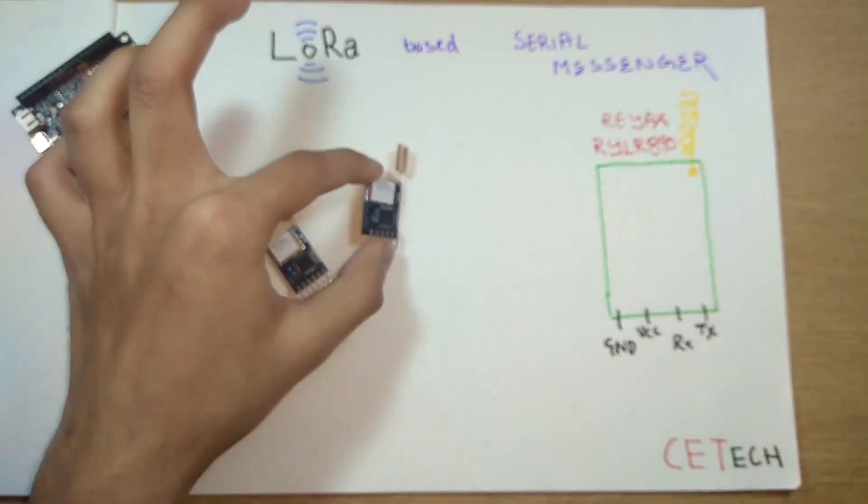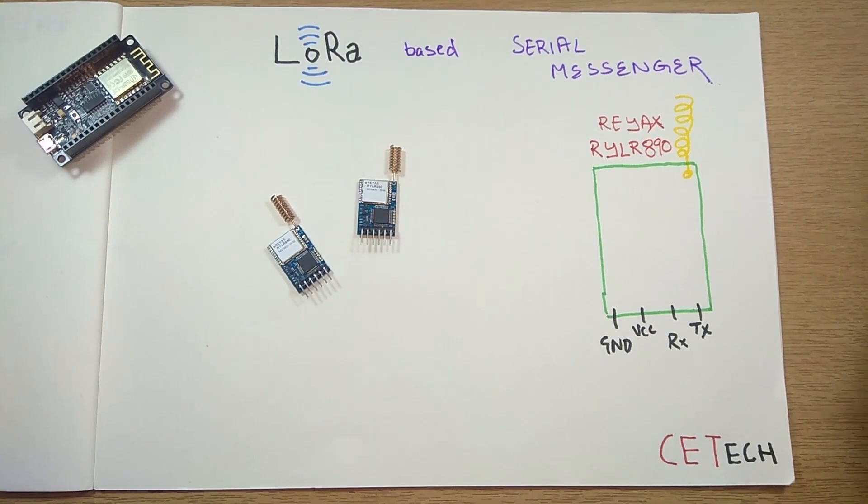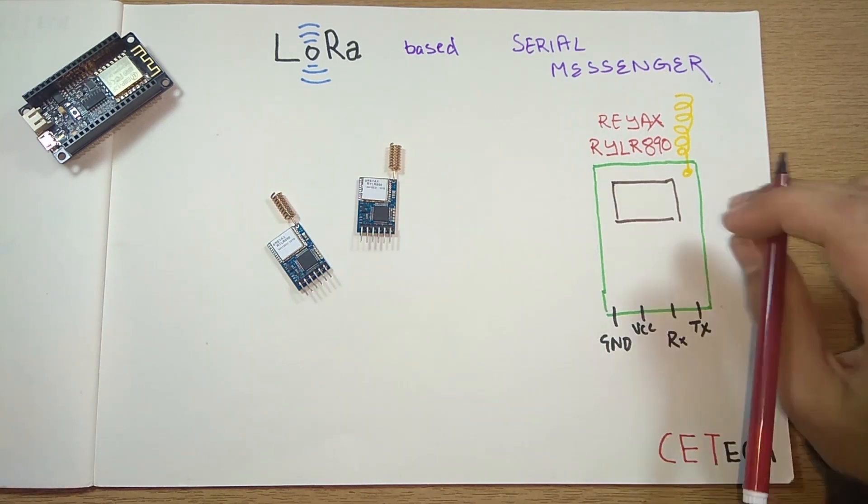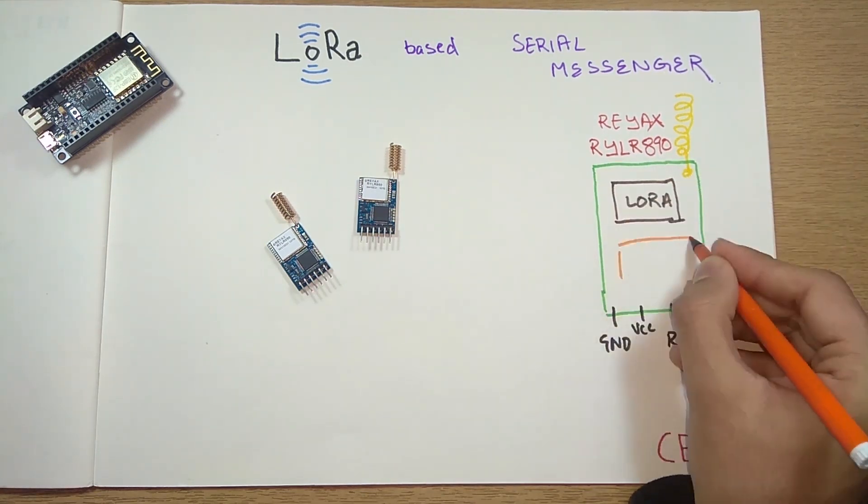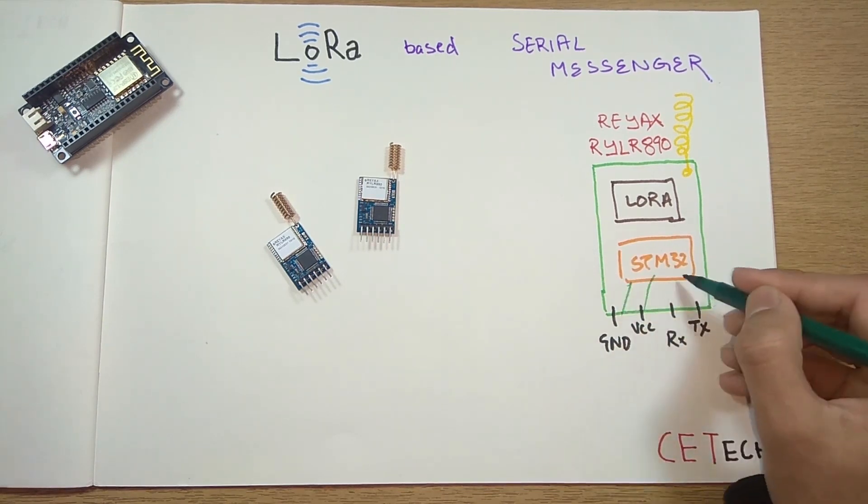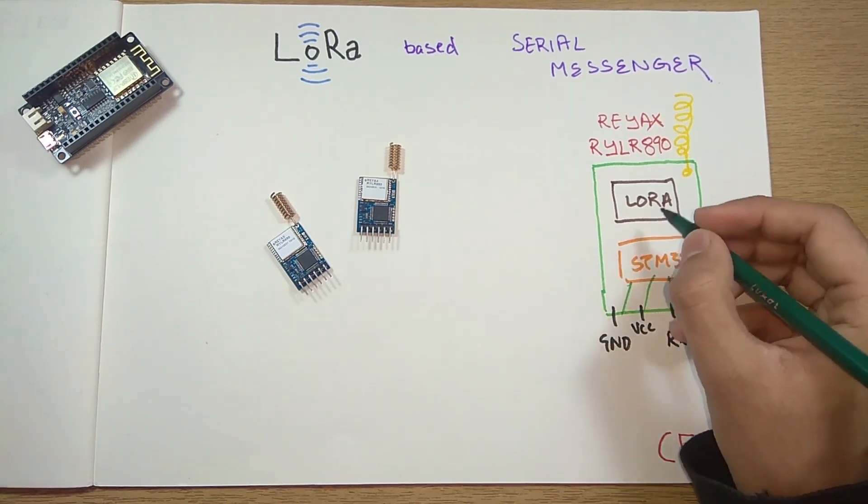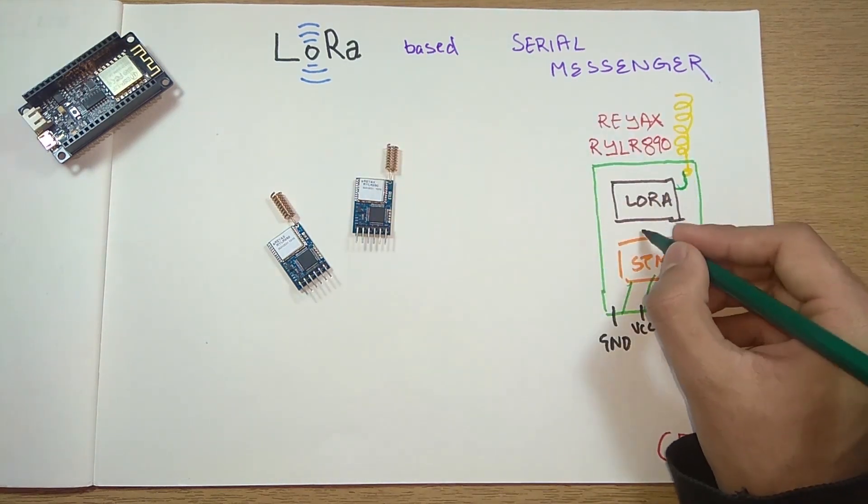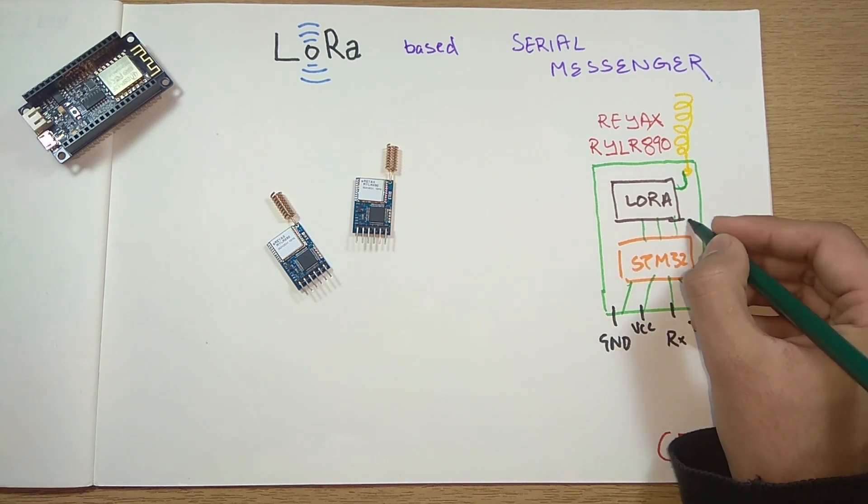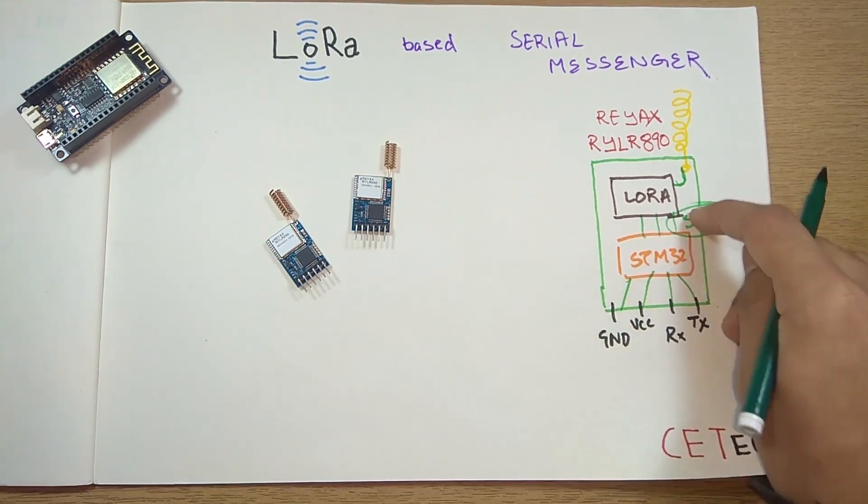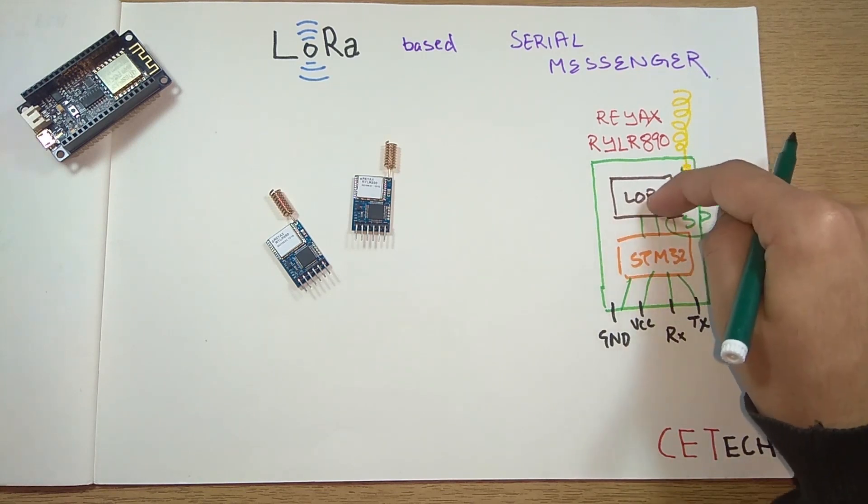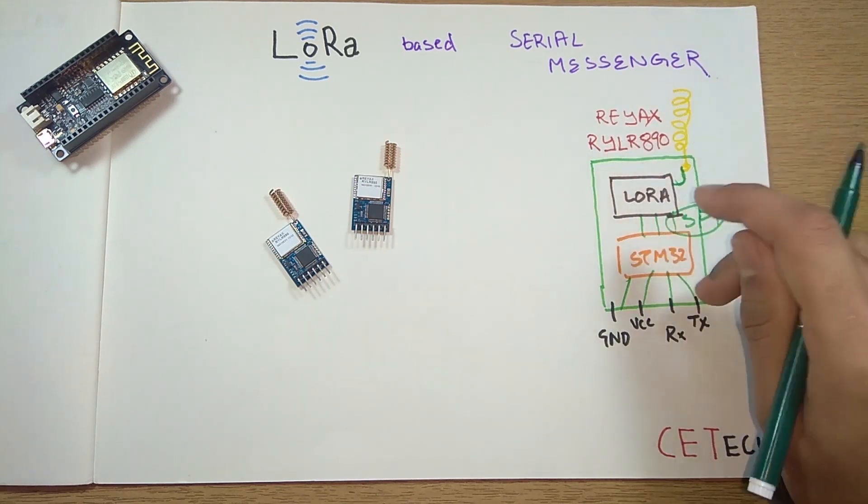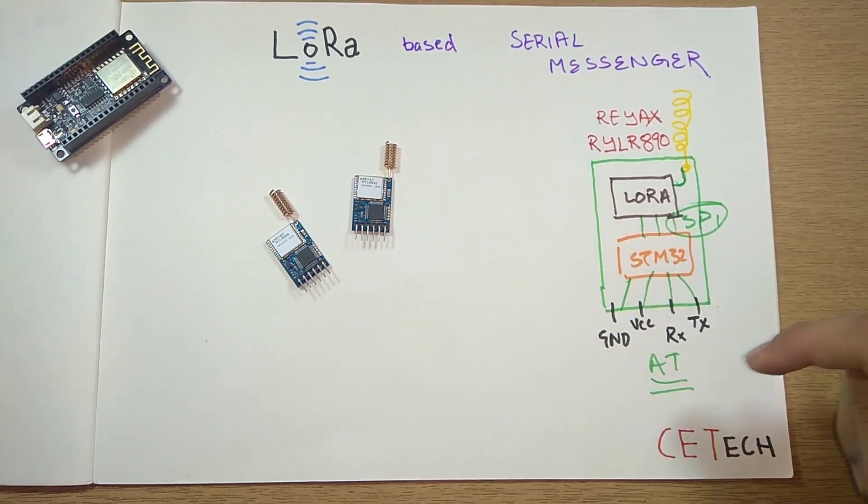To get a better picture, let's say this is the LoRa module inside the Reacts module. We also have an STM32, so all this is connected to the STM32. The LoRa is connected to the antenna - this cute little golden spring antenna. This may be connected using an SPI interface. We are saved the trouble of using an SPI interface directly from the LoRa module and can connect directly to the Reacts module using AT commands.